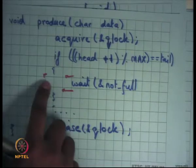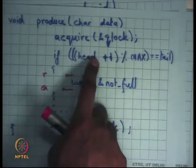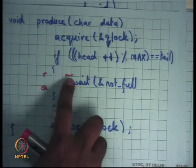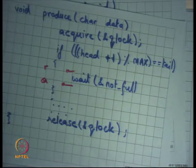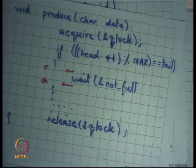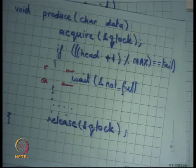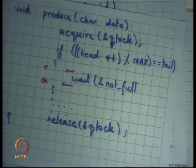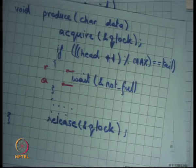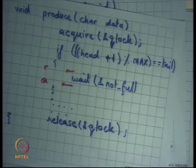The solution: condition variable wait takes two arguments — a condition variable and a lock. The semantics are that the thread calling wait will go to sleep on the CV and release the lock L atomically. It is not possible that after releasing the lock and before actually going to sleep, somebody can call notify. This atomicity prevents the lost notify problem.